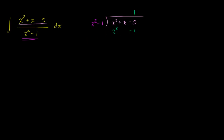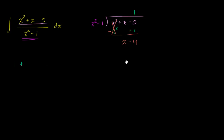I'll add the negative of it, so it's going to be negative x squared plus one. The x squared terms cancel out, and we're left with x. Then negative five plus one is negative four, so we have x minus four left over.